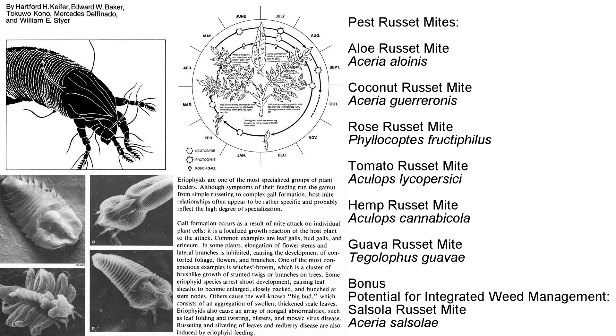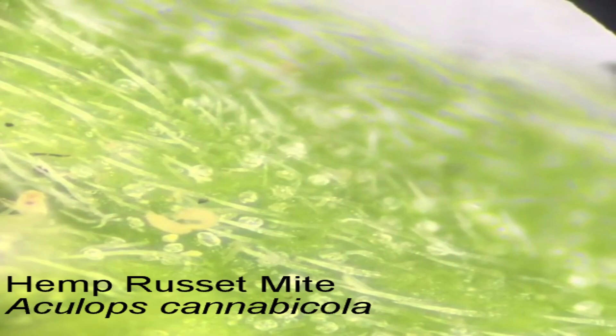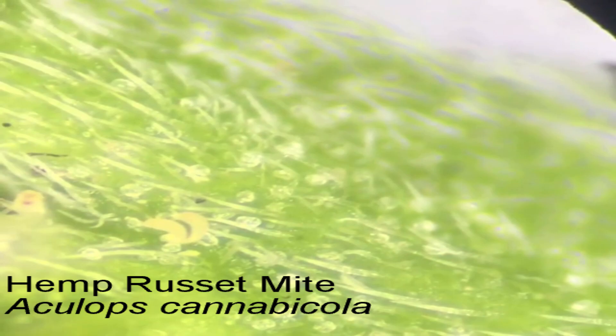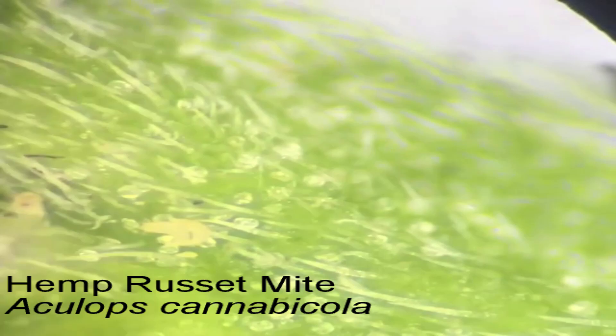Despite the vast majority of documented species living innocuously in the environment, certain species like the hemp russet mite, Aculops cannabicola, and the tomato russet mite, Aculops lycopersaci, are highly pernicious pests that can severely cripple the production of many cultivation spaces. Most russet mites are highly host-specific.